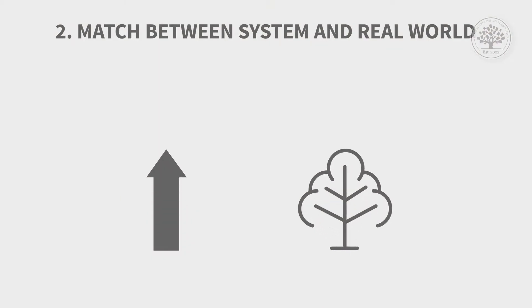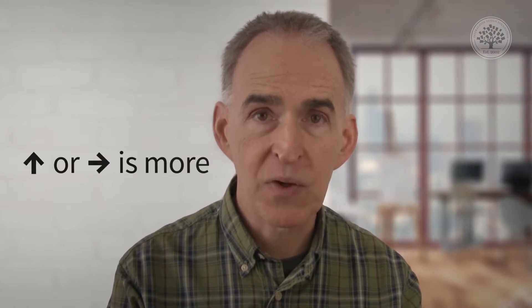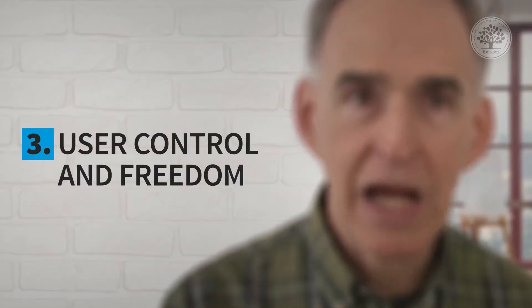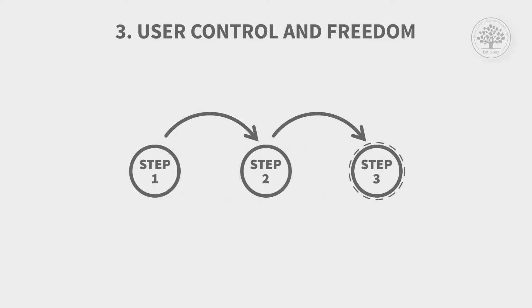Match between the system and the real world is something I've already alluded to when referring to terminology. The mapping can also be physical — for example, the natural tendency for increasing the quantity of something is up, so if you have a slider, up or to the right means more and down or to the left means less. That's what we call natural mapping.